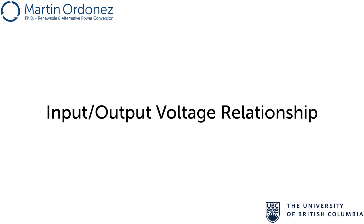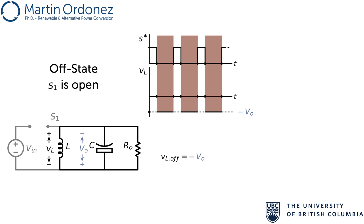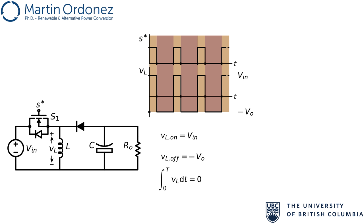The input-to-output voltage ratio found in a buck-boost converter during steady state can be determined by examining the voltage across the terminals of the inductor. In the on state, when the switch S1 is closed, the input voltage is directly applied to the inductor and maintained until the end of the on time, when the switch S1 is turned off. During the off period, the diode connects the inductor to the output voltage, which has a reverse polarity with respect to the input ground. This voltage is maintained until the end of the switching period, when the switching sequence is restarted. In steady state, the voltage balance principle requires the integral of the inductor voltage to be zero over a switching period. This means that the area below the voltage curve is equal to zero.